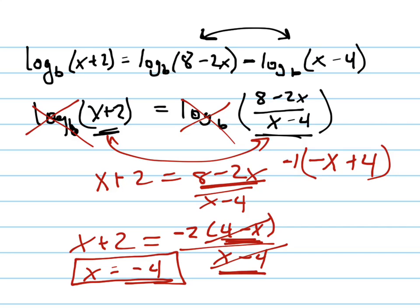In fact, in this case it doesn't work, because when I plug in negative 4 here, and here, and here, and here for x, I get a negative inside the argument of the logarithm. And log base b of negative 2 doesn't work.